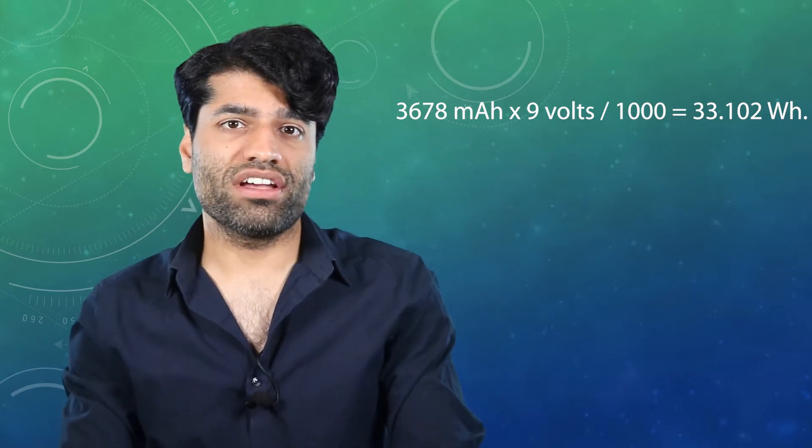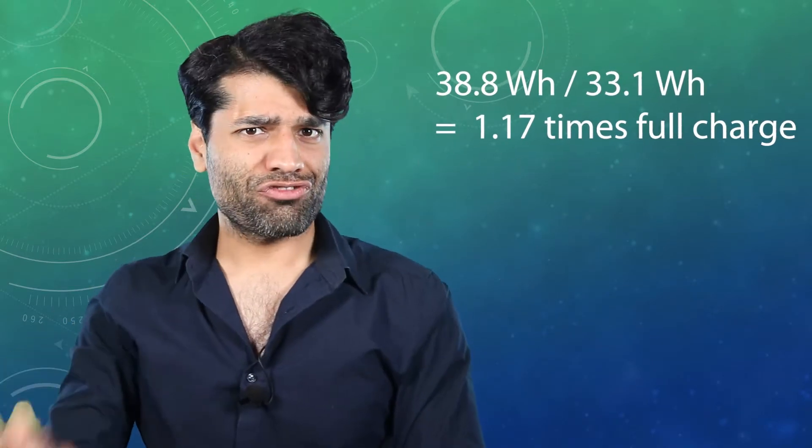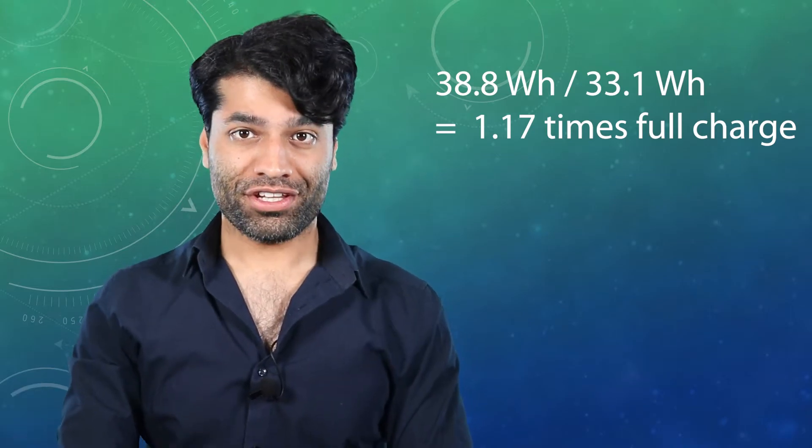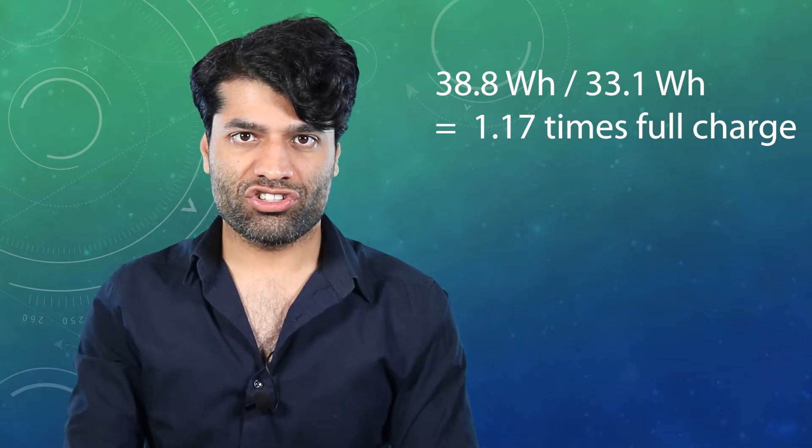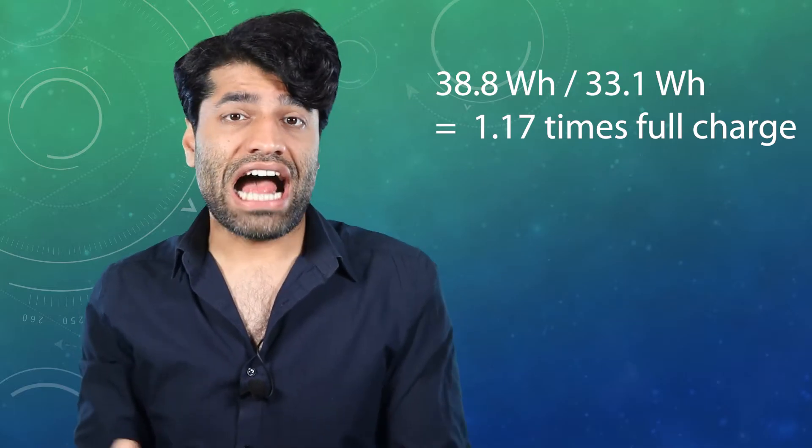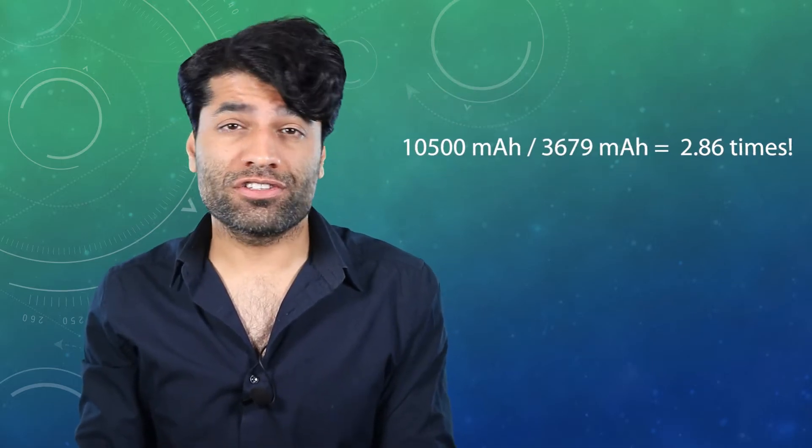So now divide power bank capacity of 38.8 watts hour by 33.1 watts hour and you'll get 1.17 times full charge. But if you just compare the milli amp hour, that means dividing ten thousand five hundred milli amp hour power bank capacity by 3700 milli amp hour, you will get 2.86 times.